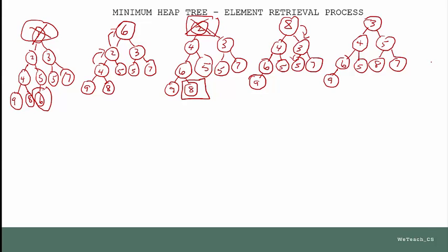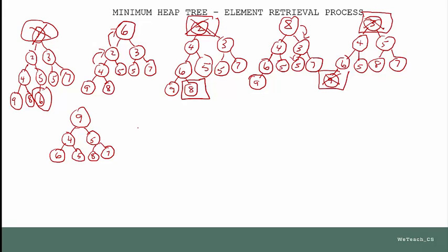Now we can see we're back in minimum heap state. Let's do it one more time — remove the top element, which is clearly the smallest one in the heap, the 3. You finish the rest of the process — what's going to happen next? The 9, being the last element in the tree, is going to replace the 3. The resulting tree is not a minimum heap tree, so we restore min heap state: the smaller of the two children of 9 is the 4, so the 4 jumps up and the 9 goes down. Then the 6 and the 5 are smaller than the 9 — the 5 is better, so the 5 jumps up and the 9 ends up down here. Now we are back in min heap state — every parent is smaller than its two children.